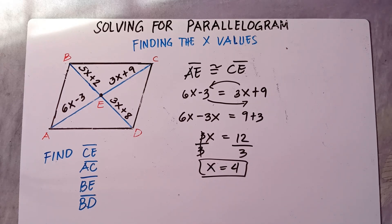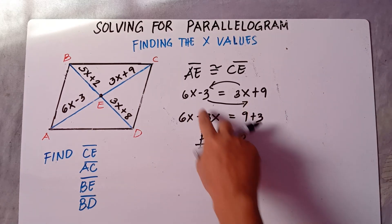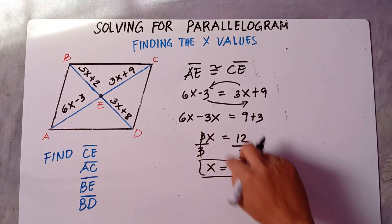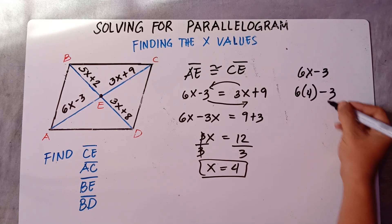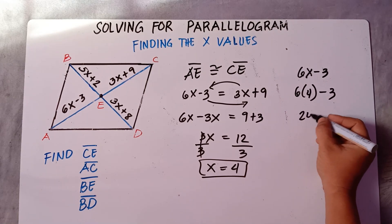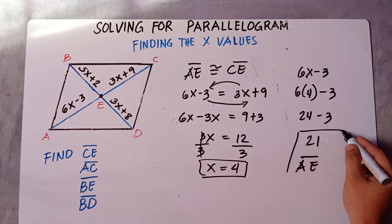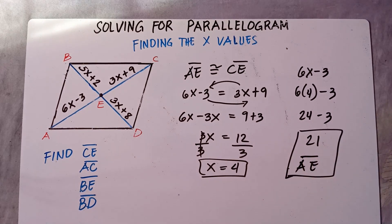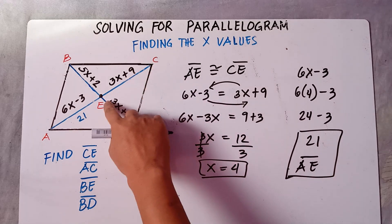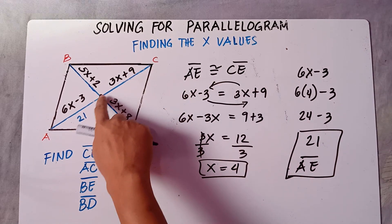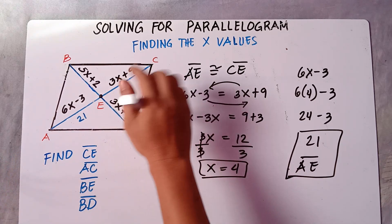So X equals 4. Substitute the value of X into the equation for line AE: 6 times 4 minus 3 equals 24 minus 3, which is 21. Therefore, line AE is 21. Since AE is congruent to CE because E is the midpoint, CE is also 21.